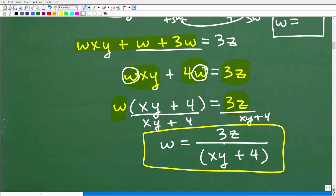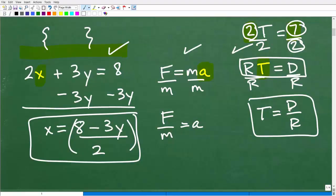So w is equal to 3z over xy plus 4. And of course, if you're able to do this problem, hopefully you're also able to do these problems. I'm pretty sure that was the case as well. But, you know, that's very, very good.